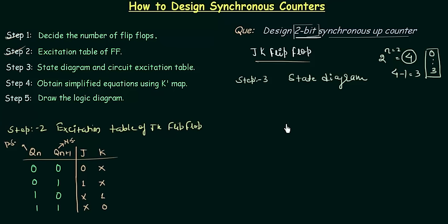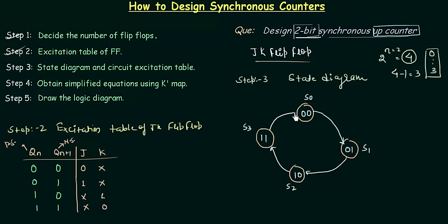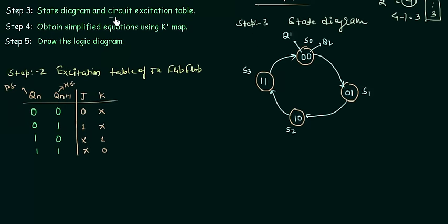Now let's draw the state diagram. We have 4 states: S0 = 00, S1 = 01, S2 = 10, S3 = 11. Since we are designing an up counter, with each passing clock pulse it counts a higher value. Starting from S0, it goes to S1, then S2, then S3, and back to S0. Q1 and Q2 are the outputs of the two flip flops. In step 3 we also have to draw the circuit excitation table, which is the most important part of the design.